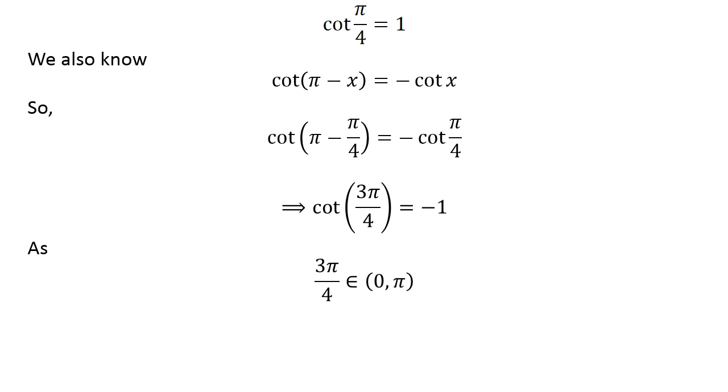As 3 times pi upon 4 lies in the open interval of 0 and pi, 3 times pi upon 4 is the principal value of inverse of cotangent of minus 1.